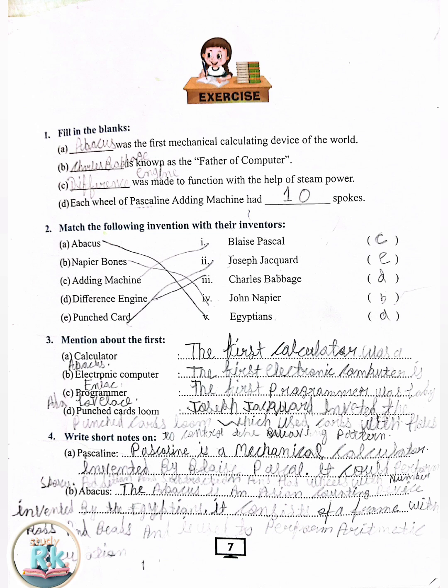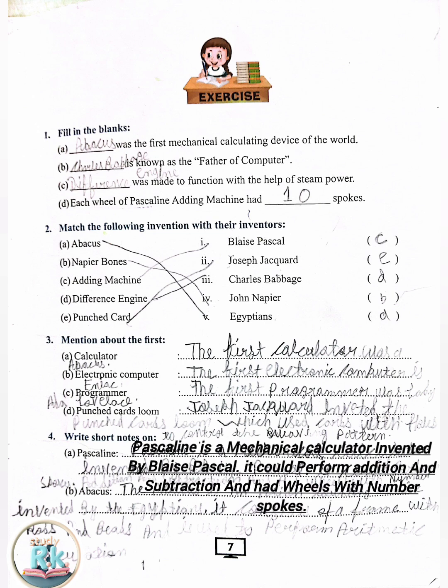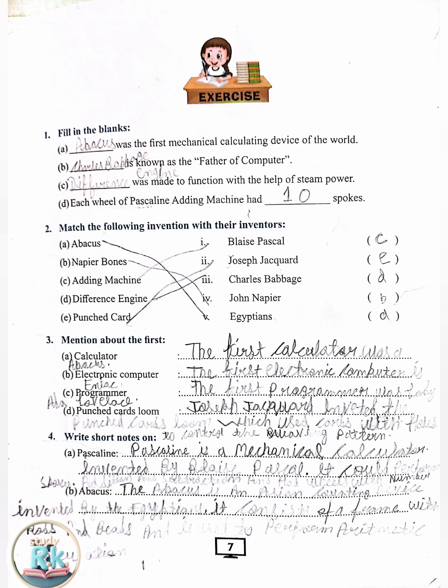4. Write short notes on: A. Pascaline. Pascaline is a mechanical calculator invented by Blaise Pascal. It could perform addition and subtraction and had wheels with numbered spokes.